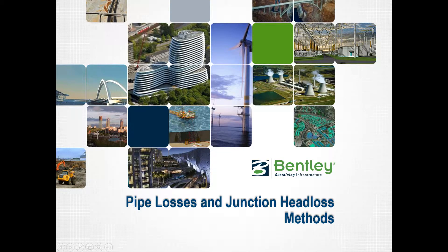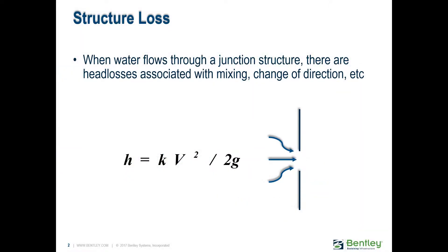We talked about how when we run the hydraulics, most of the time the energy gets lost due to friction. The other culprit for eating up our energy is the energy lost at the junctions. When water flows through a junction structure, the water mixes, changes direction, etc. We use this equation to quantify those losses: we multiply the velocity head times a K value — and that is the bottom line of this presentation.